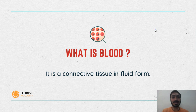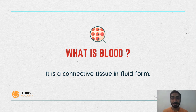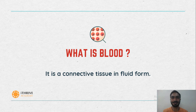As we all know, the human body is made up of numerous cells. Cells are the structural and functional unit of the body. A collection of cells having similar structure and performing a common function is known as tissue. Blood is also one kind of tissue. It is the connective tissue in fluid form.